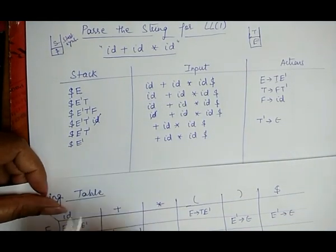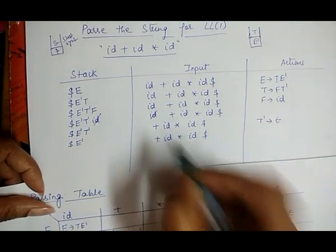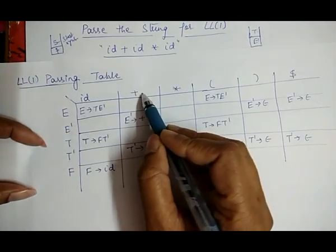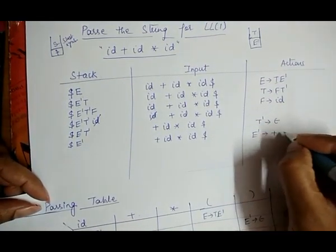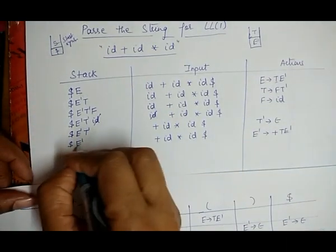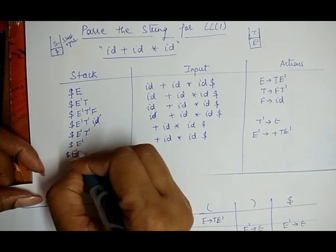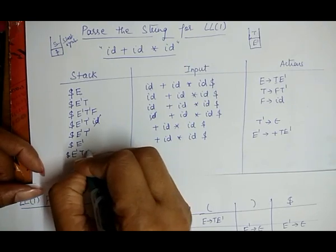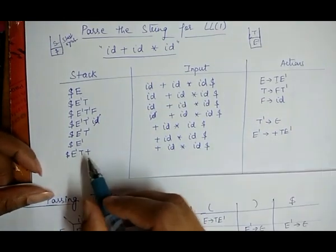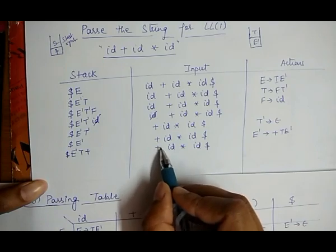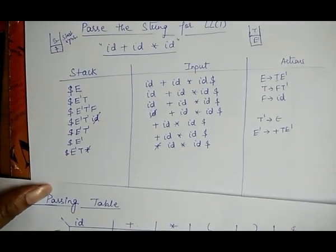The top of the stack is E' and the terminal is plus. From the table, E' on seeing plus: the action is E' → +TE'. So we substitute E' as plus, T, E'. The stack becomes: dollar, E', T, plus (top). The input is plus id into id dollar. The top of the stack is plus and the input is also plus — they match, so we pop plus. No action is recorded.